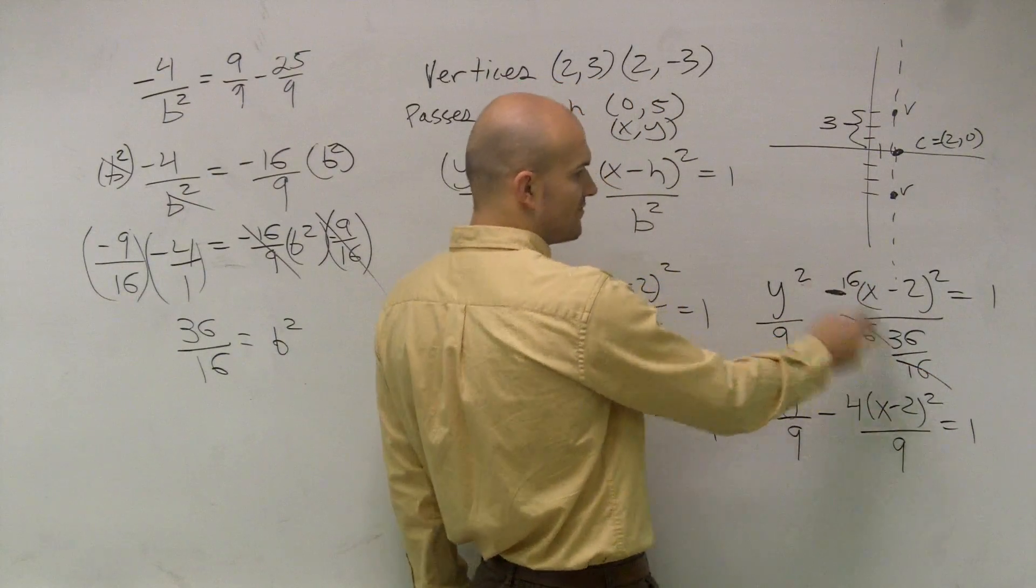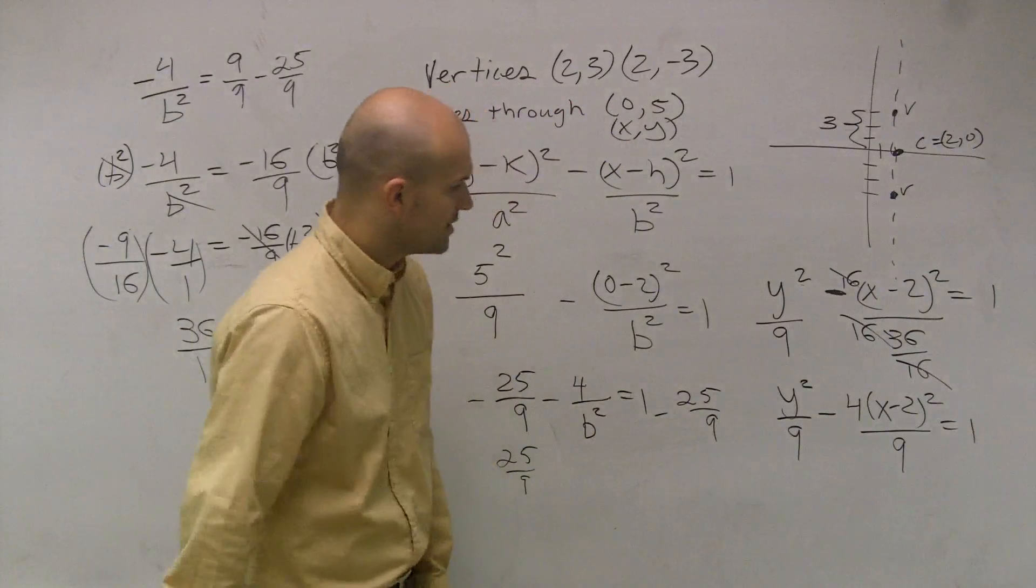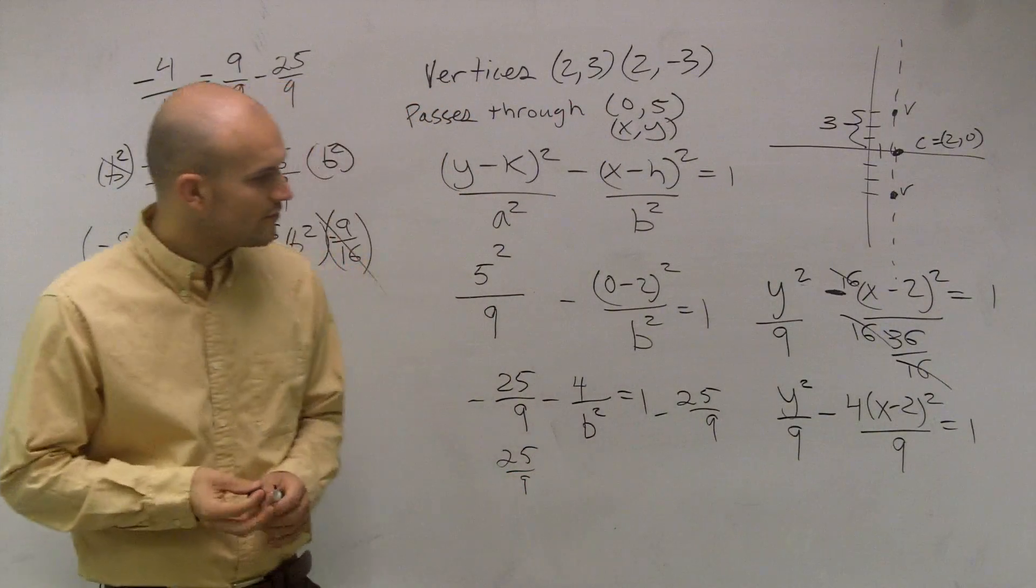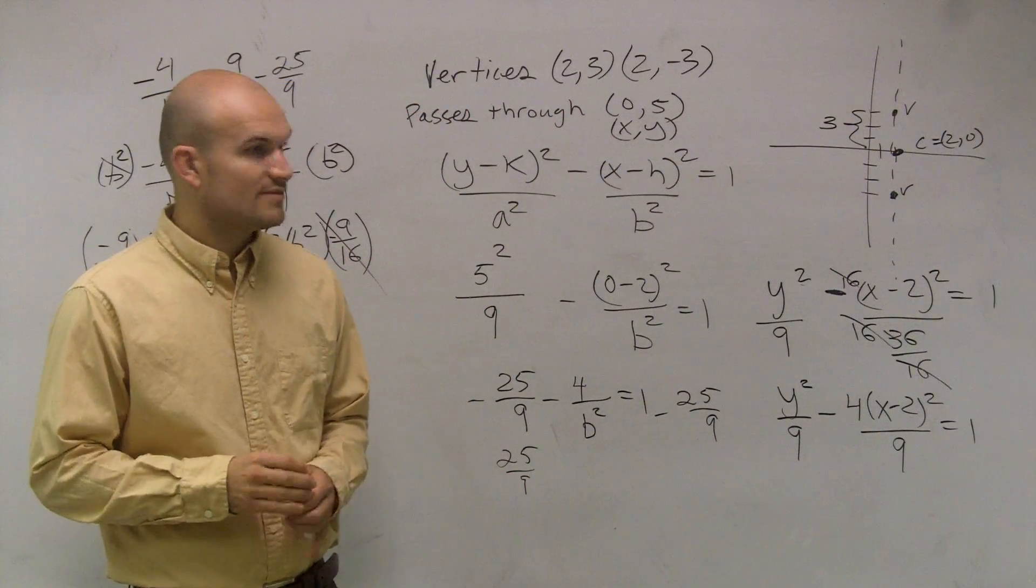So I have y squared over 9 minus 4 times x minus 2 squared over 9 equals 1. Since I simplified this, then I reduced that as well. So I get y squared divided by 9 minus 4 times x minus 2 squared divided by 9 equals 1.